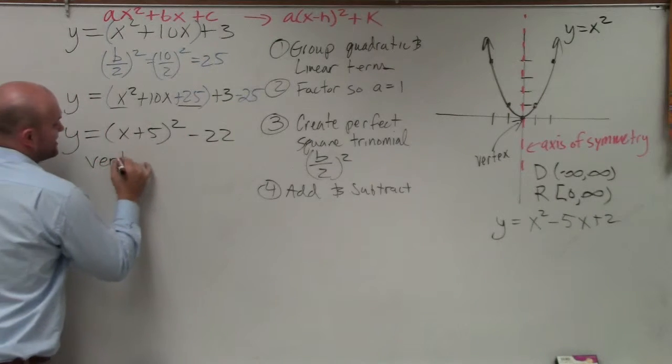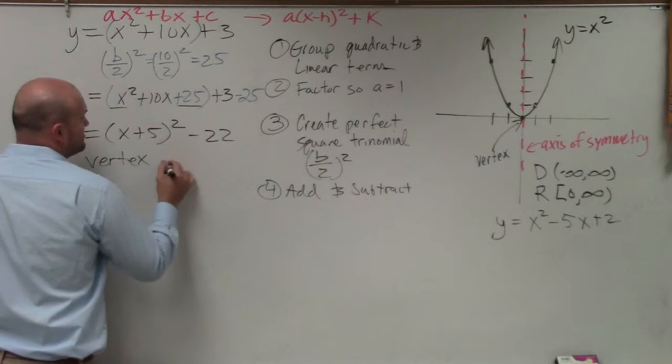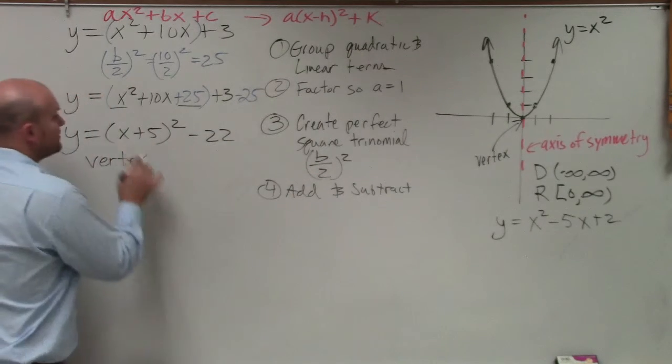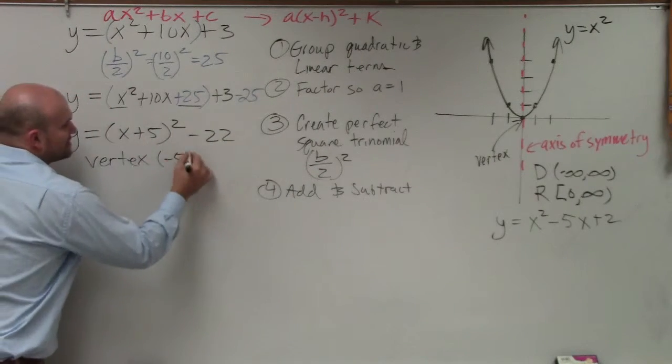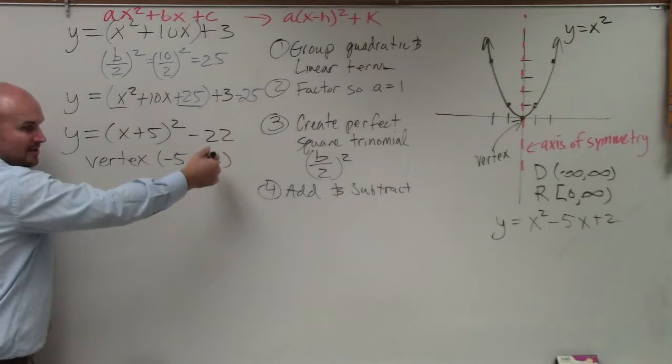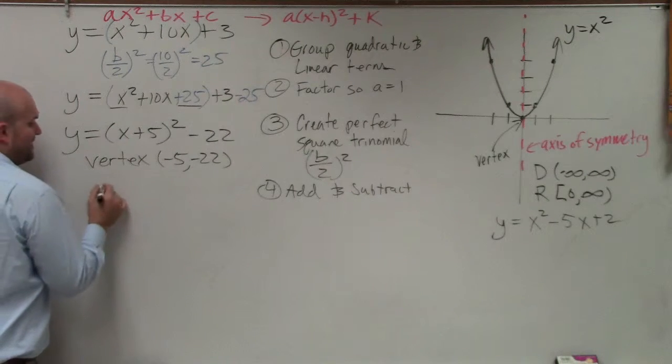So now I can say my vertex is going to be at h comma k, which I erased, right? Negative 5, negative 22. Very good. Make sure it's the opposite. Remember, it's x minus h, correct? So if that's plus, it's opposite. So it's negative 5.